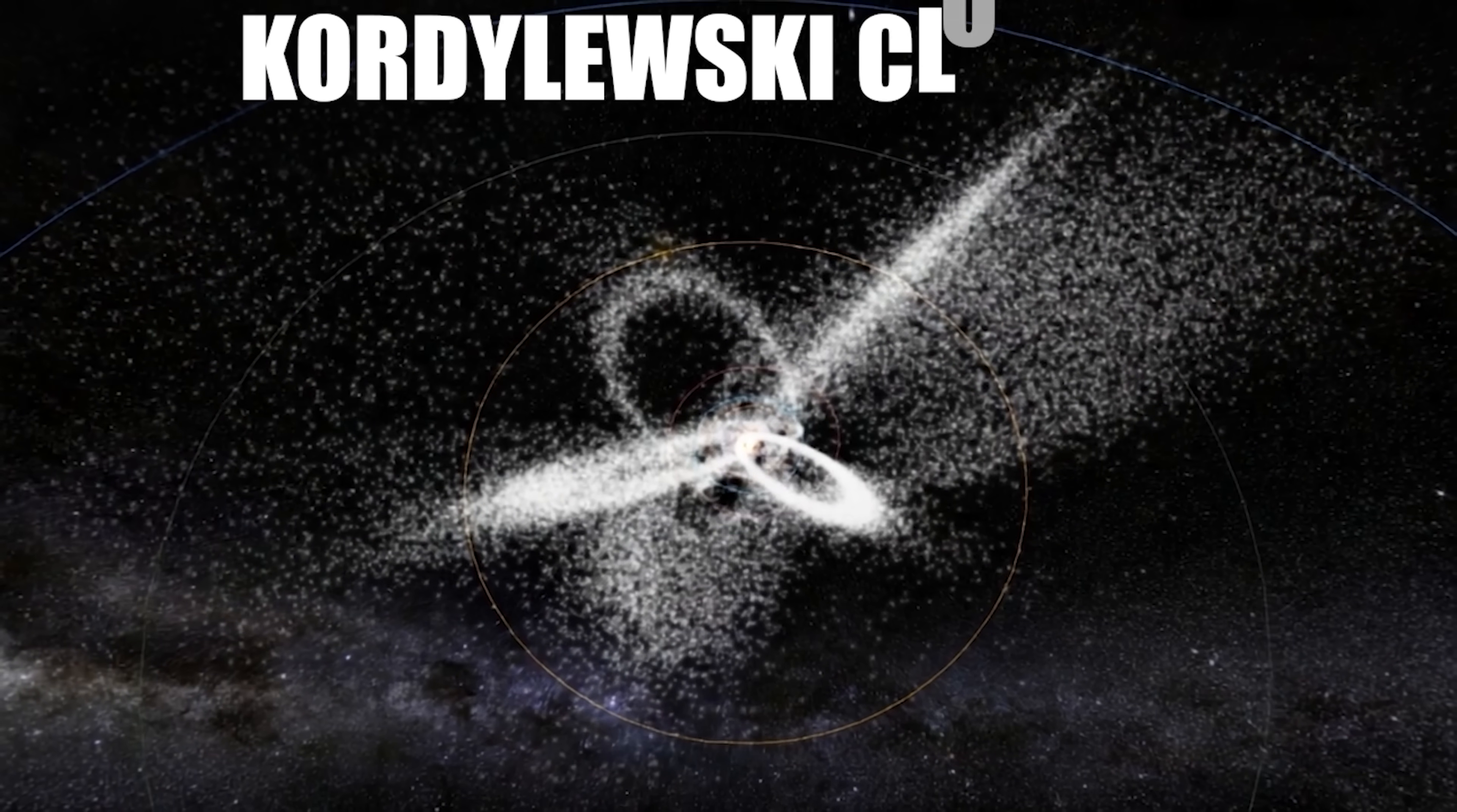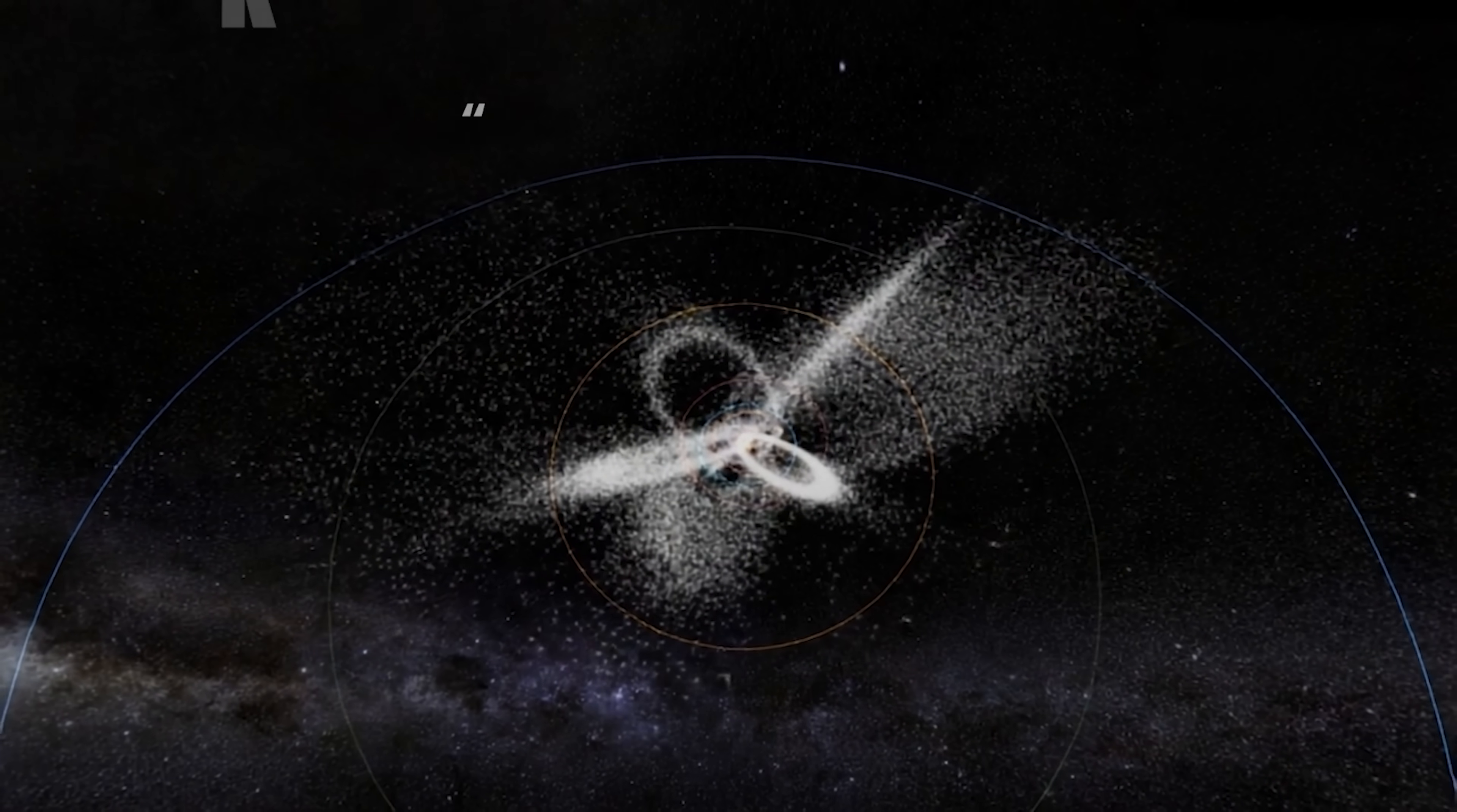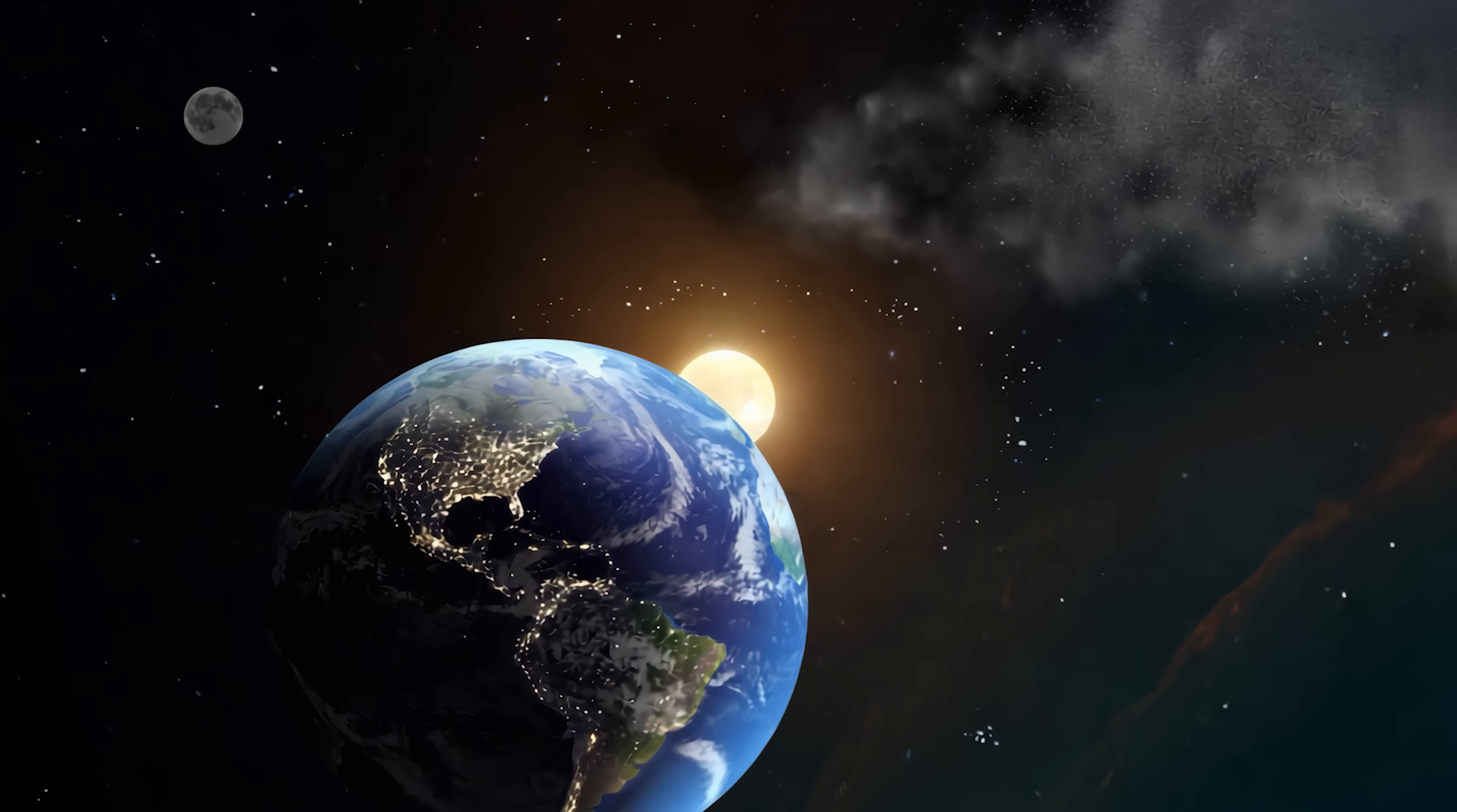Scientists call them Kordolewski clouds, but the nickname Ghost Moons captures their eerie nature perfectly. They appear and disappear like cosmic phantoms, challenging everything we thought we knew about our immediate celestial neighborhood.